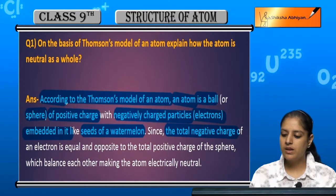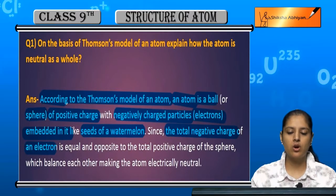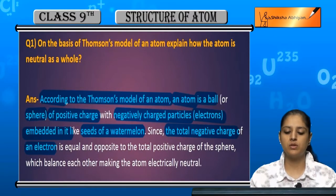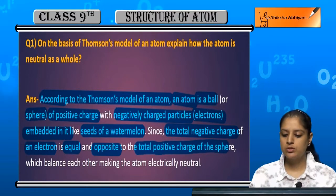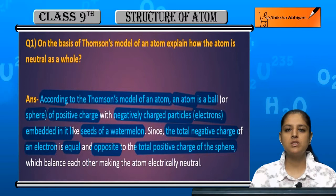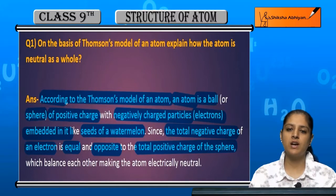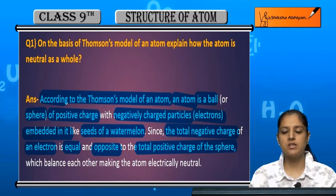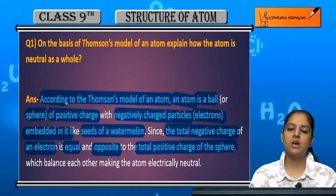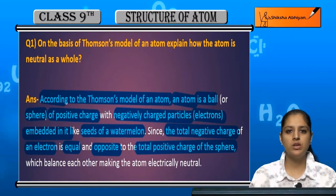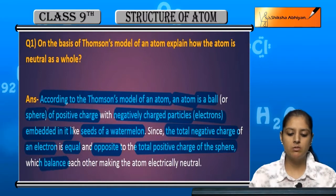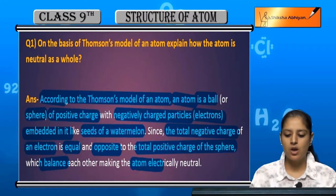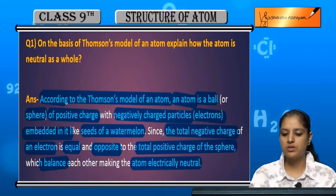They said that the total negative charge in the electrons is equal and opposite to the total positive charge of the sphere. The positively charged sphere - the positive charge and the electrons are equal, and the negative charge is equal. So if negative charge and positive charge are equal, they balance each other, making the atom electrically neutral.